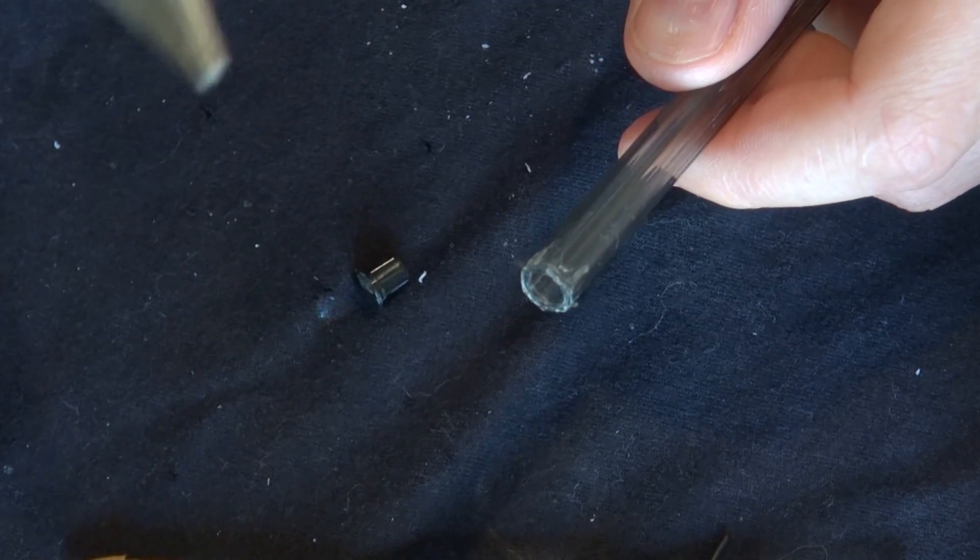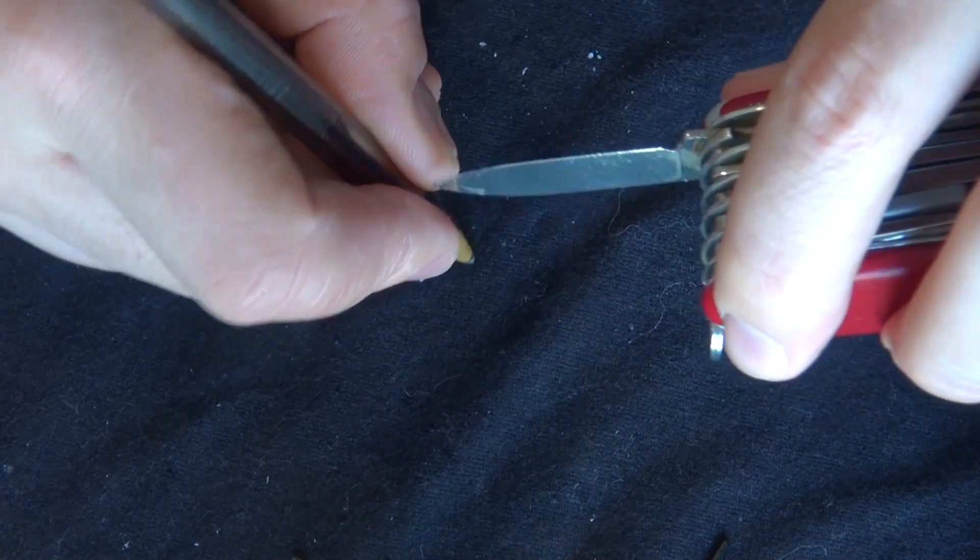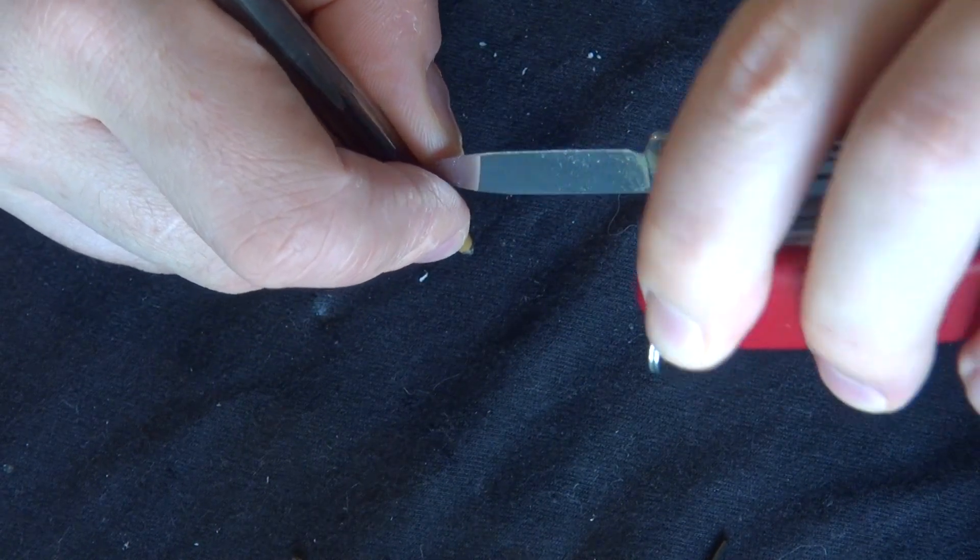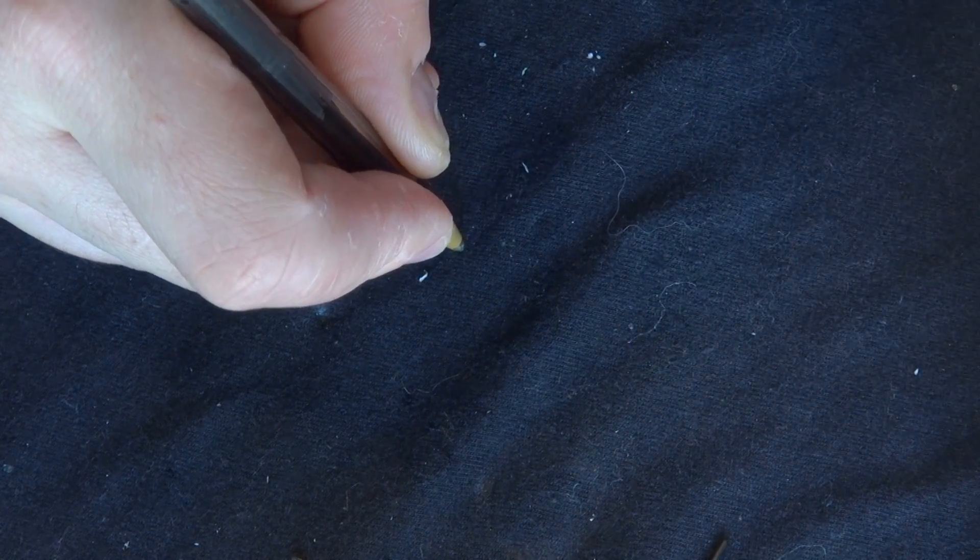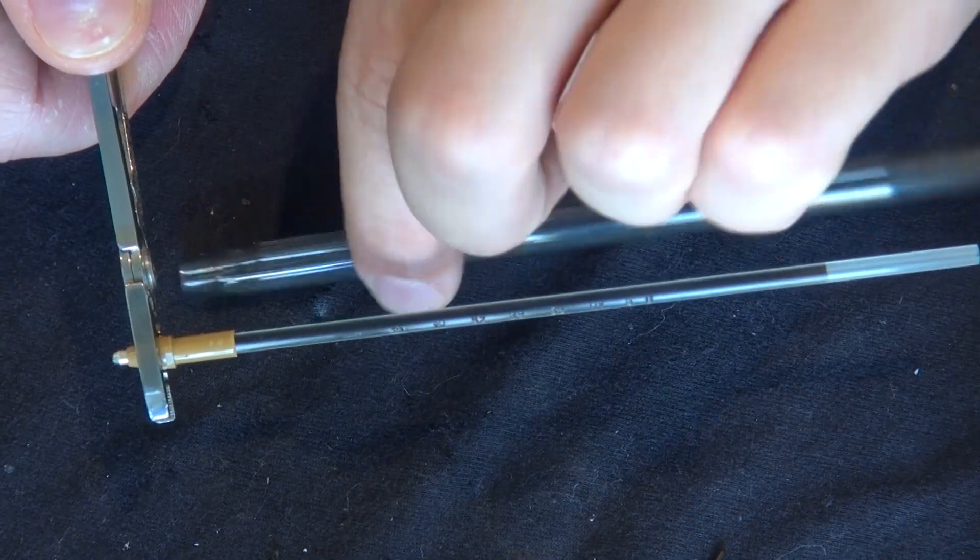Now remove the end cap of your pen and get a feel of where the LED might be when you hold the pen regularly, so you can comfortably hold it with the LED.